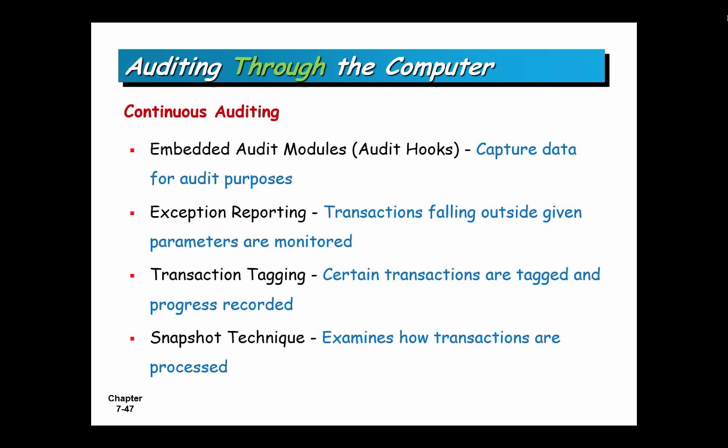These are all part of what's considered continuous auditing. As I said, Rutgers' graduate program has done some fairly forward-thinking research in this area and has a pretty good reputation in the field. These embedded audit modules, exception reports, all these things happening throughout the audit — 365 days a year. You don't come in and audit for just one month and then sign off. The audit is a 365-day process — that's continuous auditing.